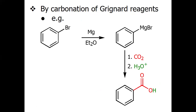Carboxylic acid can also be obtained using carbonation. First, the alkyl halide is treated with magnesium in an aprotic solvent to give the alkyl magnesium bromide — a Grignard reagent. In this specific example, the compound is phenyl magnesium bromide, which on treatment with carbon dioxide and acidic workup gives the carboxylic acid. The name of this compound is benzoic acid.